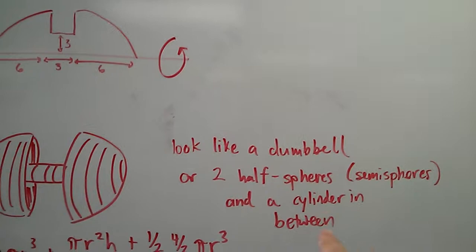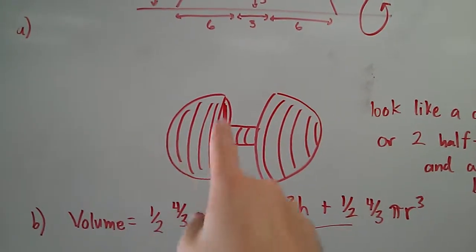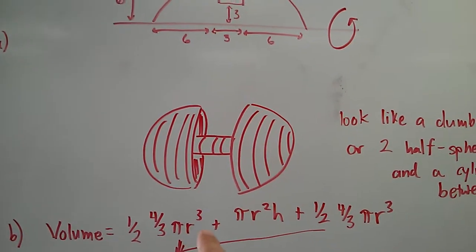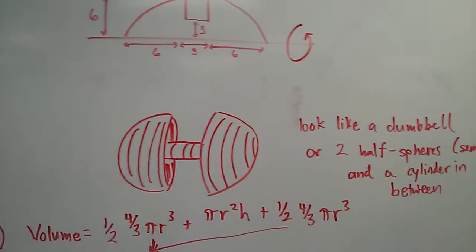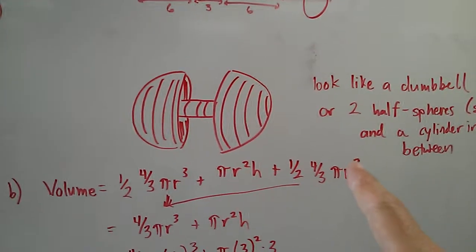To find the volume, a half sphere is 1/2 times 4/3 π r³. The cylinder is π r² h, plus the second half of the sphere. If you add those two halves together, you can get a whole sphere plus the cylinder in between.